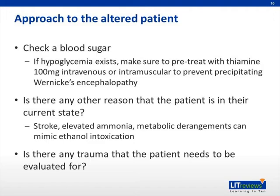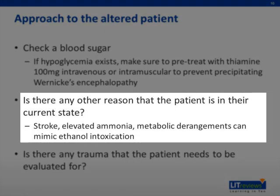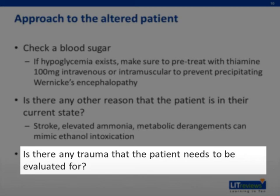How to approach the altered patient you think has ethanol intoxication: you always want to obtain a blood sugar. If the patient is hypoglycemic, you want to pre-treat with thiamine 100 mg either intravenously or intramuscularly to prevent precipitation of Wernicke's encephalopathy. Also, consider if there are other reasons the patient is in this state — strokes, elevated ammonia levels, and metabolic derangements are all examples of things that can mimic ethanol intoxication. Lastly, make sure there's no evidence of traumatic injury.